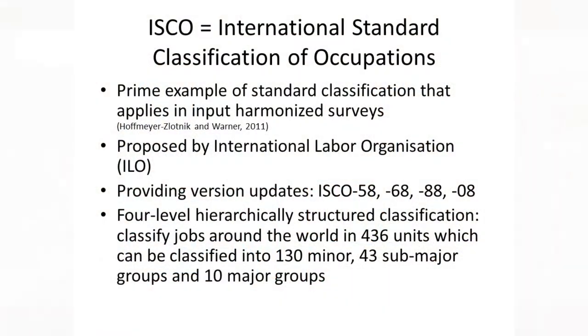To better understand the concept of standard classifications, let's look at two examples of popular sociodemographic variables. The International Labor Organization has developed the International Standard Classification of Occupations, briefly called the ISCO, which provides a four-level hierarchically structured classification to classify jobs around the world. It divides those into 436 units and those can be classified again into minor, sub-major, and major groups.